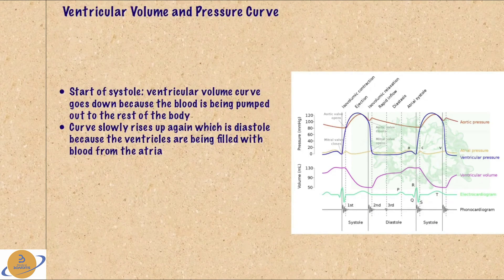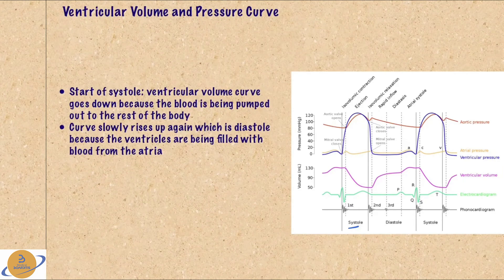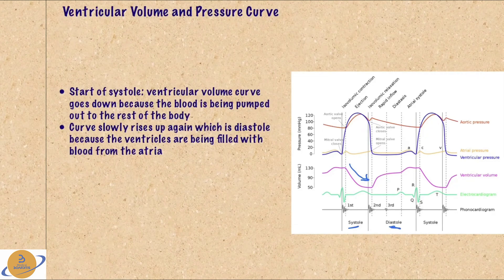The Wigger diagram I'm discussing today represents the left side of the heart. It's very similar for the right — the pressures are just different because the right side of the heart operates at lower pressure. Looking at the ventricular volume curve: in systole, the ventricles are emptying, so the volume goes down. In diastole, the ventricles are being filled with blood from the atria and volume goes up.